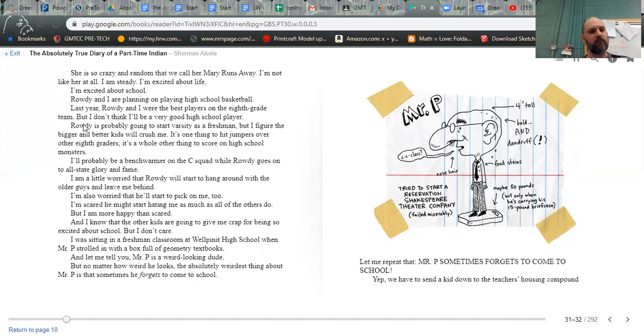Rowdy and I are planning on playing high school basketball. Last year, Rowdy and I were the best players on the eighth grade team, but I don't think I'll be very good. I don't think I'll be a very good high school player. Rowdy is probably going to start varsity as a freshman, but I figure the bigger and better kids will crush me. It's one thing to hit jumpers over eighth graders, it's a whole other thing to score on high school monsters. I'll probably be a bench warmer on C squad while Rowdy goes on to all-state glory and fame.